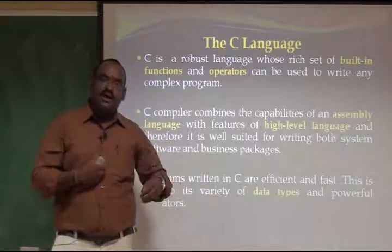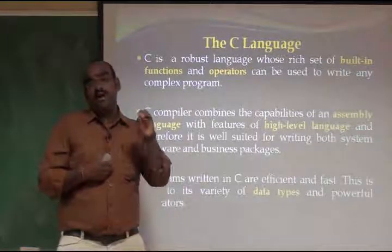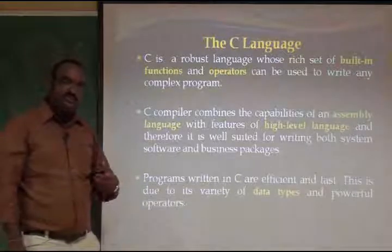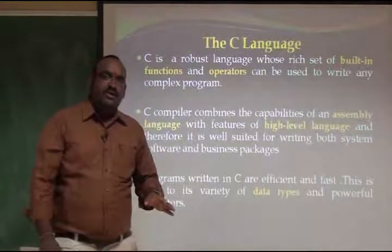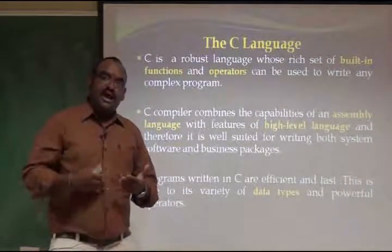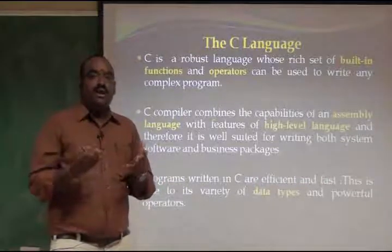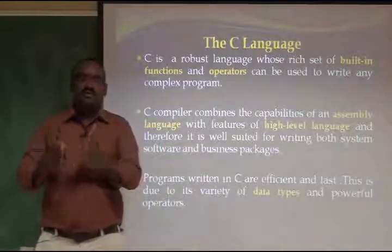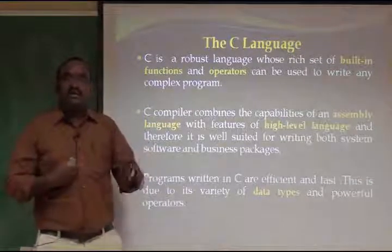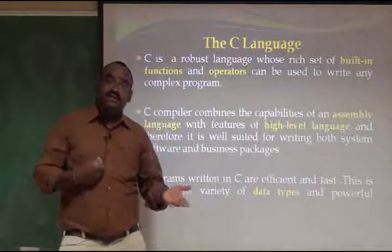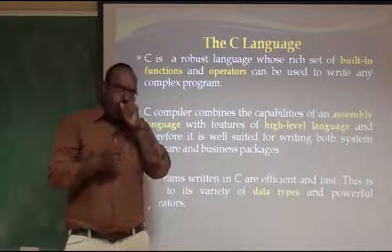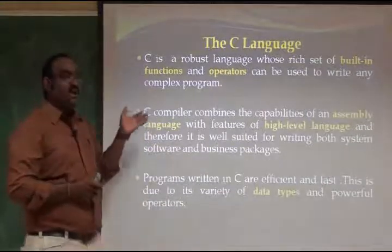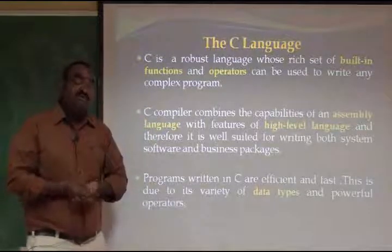C is a combination of many built-in functions, operators, and data types. For example, to describe myself: my name is a character value — alphabets from A to Z. My number in the institution is numeric, such as 90. My date of birth has a date format — month, date, and year. The machine must understand what type of data we are using when writing code. C language gives you the rich features of many built-in functions, operators, and data types.